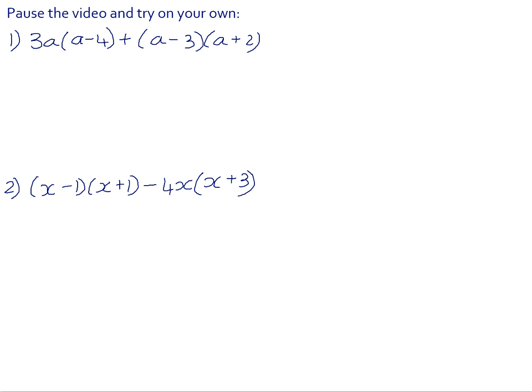In number 1, if we look carefully, we can see there are two terms. 3a times a minus 4 is a single term and that binomial there is a single term as well. So we first need to do the multiplication within those terms. 3a times a is 3a squared. 3a times negative 4 is negative 12a.